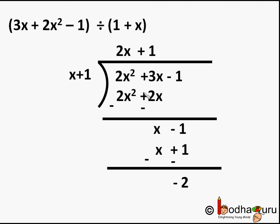So the answer of 2x² + 3x - 1 divided by x + 1 is quotient of 2x + 1 and remainder of -2.